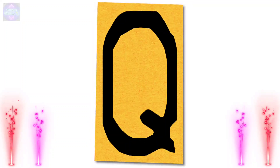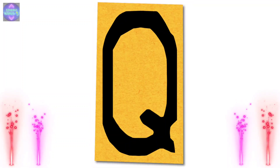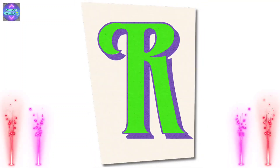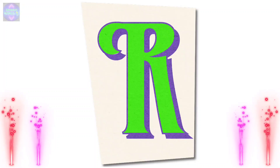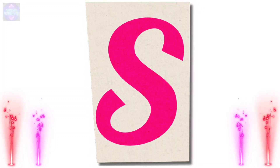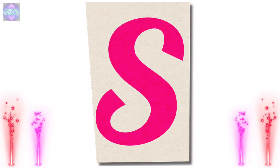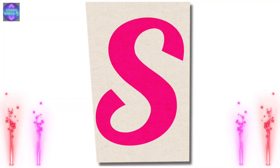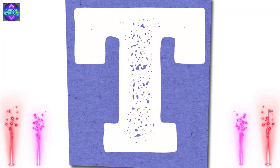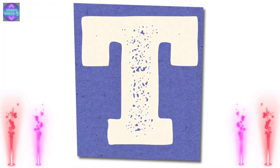Q. Q for queen. R. R for rabbit. S. S for sun. T. T for tiger.